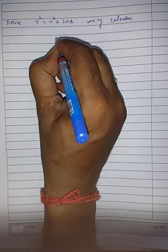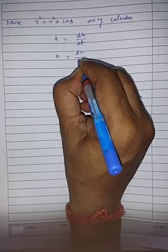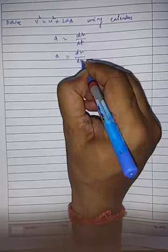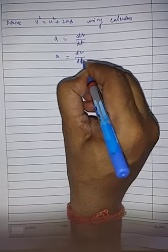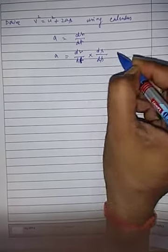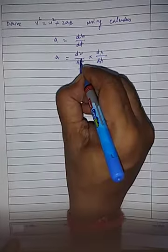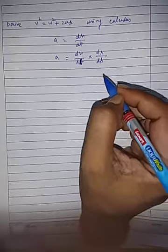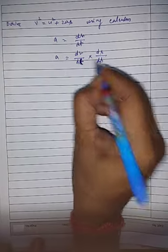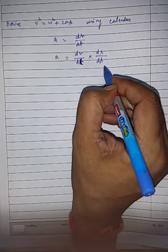Your acceleration is a = dv/dt. And I'm multiplying ds in numerator and denominator. I have the permission of doing so because both the terms are equal (dt/dt = 1). Since both terms are equal, I have the permission of multiplying numerator and denominator with the same quantity.